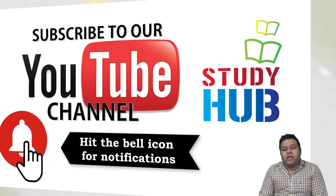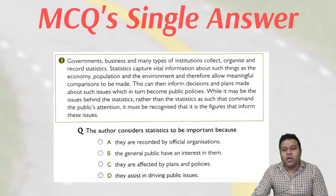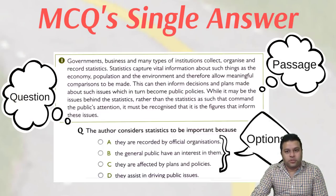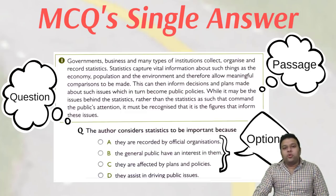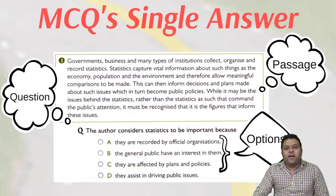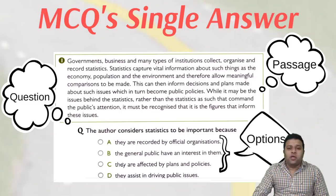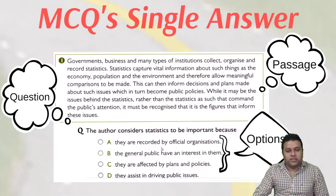For multiple choice question single answer, there are three parts: a passage, a question, and options. We need to do two things: save time and get the correct answer. Should you read the question first, the passage first, or the options first? A lot of people read the question, then the options, then look at the passage. Some students read the passage, then the question, then the options. Neither is wrong, but it's about finding the best strategy.